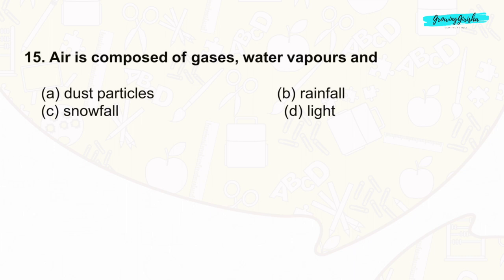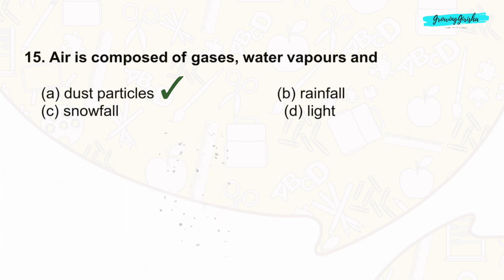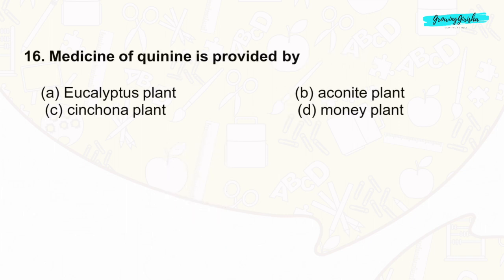Question 15: Air is composed of gases, water vapors, and dust particles. The correct answer is option A: dust particles.